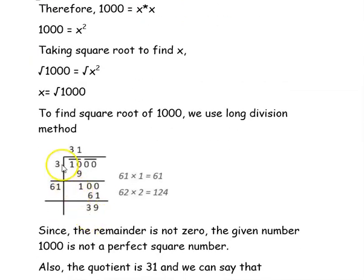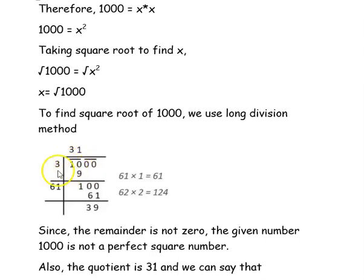In the long division method, first we write the number. Then we pair the digits from the ones place and place a bar. I have paired 0, 0 and placed a bar, then paired 0 and 1 and placed a bar. We then consider the number under the leftmost bar, which is 10, and find a number for the divisor and quotient such that they are equal and whose square is less than this dividend.